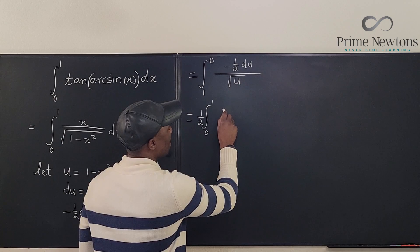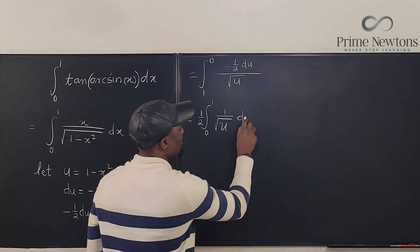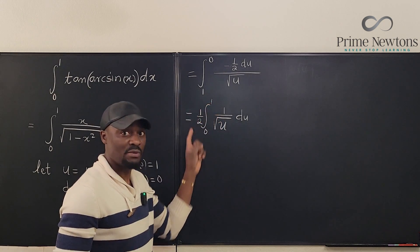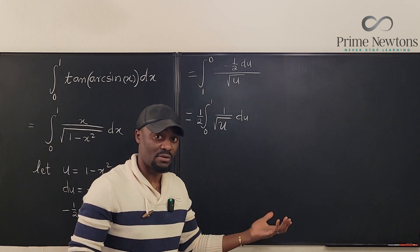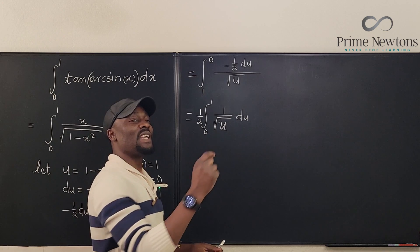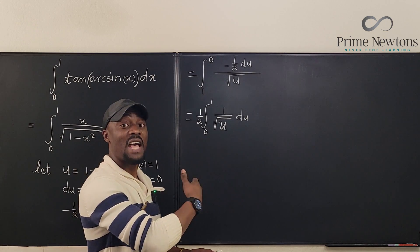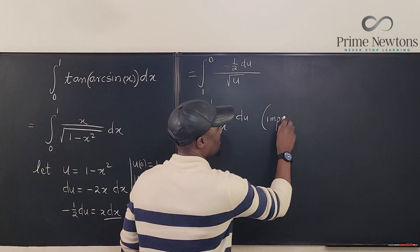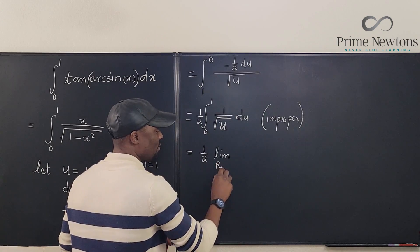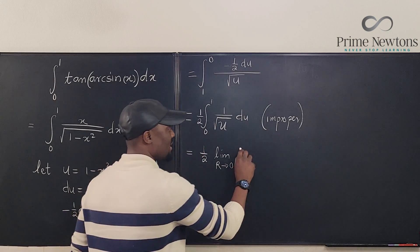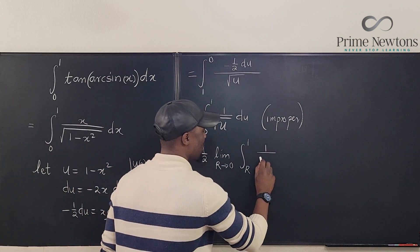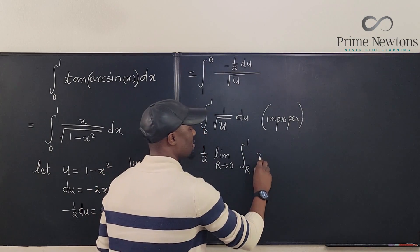What we have is one-half times the integral from 0 to 1 of 1 over the square root of u du. I know that I cannot plug in 0 here — this function is not defined at one of the boundaries. 1 is okay but 0 is not, so this integral is an improper integral. Anytime you have an improper integral, you have to take that point that makes it improper and write the integral as a limit. So this equals one-half times the limit as R goes to 0 of the integral from R to 1.